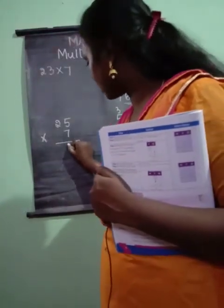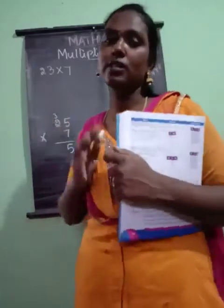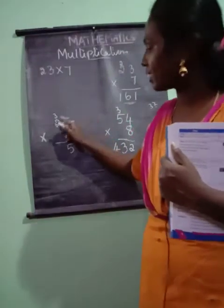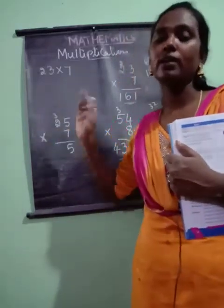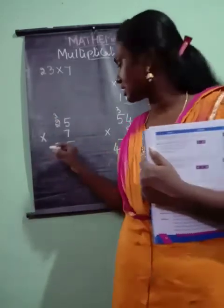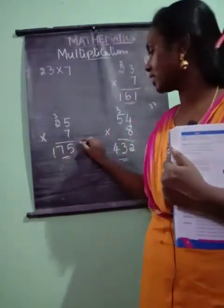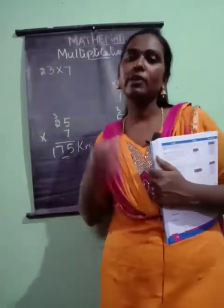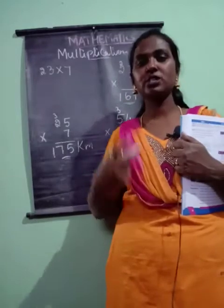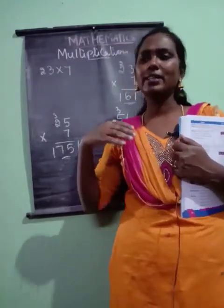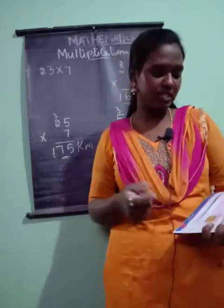Seven fives are 35 — write five and give three as carry. If by mistake you write three first and five as carry, your answer will be totally wrong. Be concentrated: write whichever number comes in the ones place first, and give the tens digit as carry. Seven twos are 14, plus 3 is 17. So we get 175. Manoj travels 175 kilometers in 25 days. Always read the word problem once or twice to understand the concept, then you will know what steps to follow.